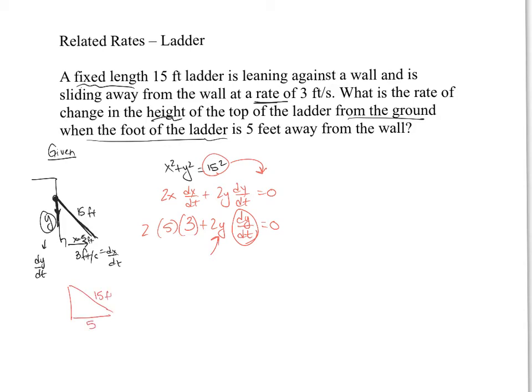And y would end up being the square root of 15 squared minus 5 squared, which is the square root of 225 minus 25. So that's 200, which is 10 root of 2, but let's go ahead and keep it as a decimal. So as a decimal, that's going to be 14.1421.